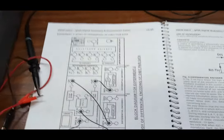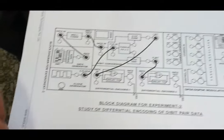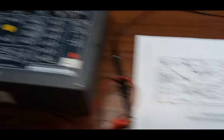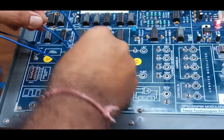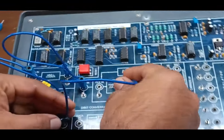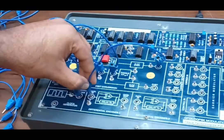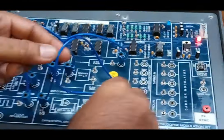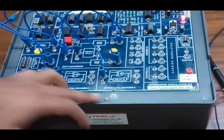Now we move on to the next experiment, which is the study of differential encoding of D-bit pair data. We make the connection as per the block diagram shown in the user manual. Connect data input to data generator output. Connect NRZ data to data in. Connect S clock generator output to clock in in the D-bit conversion sector. Connect I-bit to differential encoder 1 and Q-bit to differential encoder 2. At the differential encoder, we will observe the output waveforms.